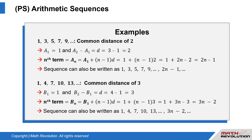The nth term equals b(n) equals b(1) plus (n−1) times d equals 1 plus (n−1) times 3 equals 1 plus 3n minus 3 equals 3n minus 2. So the sequence can also be written as 1, 4, 7, 10, 13, and so on until 3n minus 2, and so on.